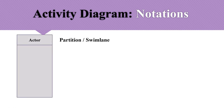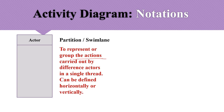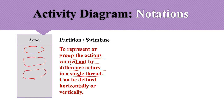The last notation is the partition or swim lane. Partitions and swim lanes are totally optional and are used to represent the grouping of actions carried out by different actors in a single thread. All actions related to one actor are placed in one lane. We can create one lane per actor, and these lanes can be arranged horizontally or vertically. Although optional, they are very useful for representing different actors' activities.